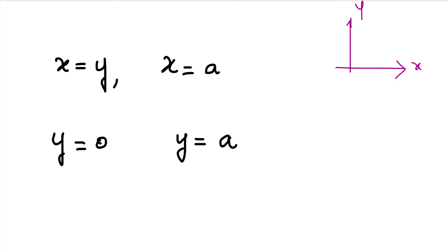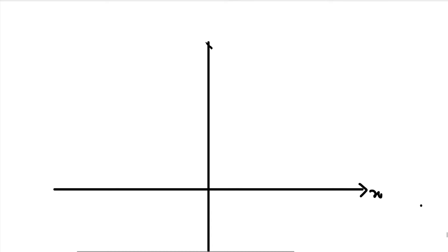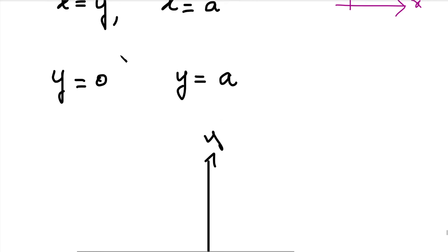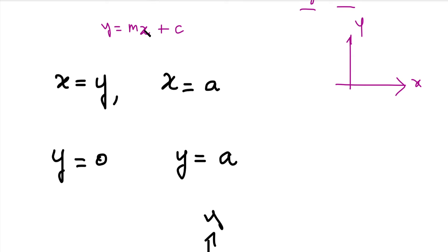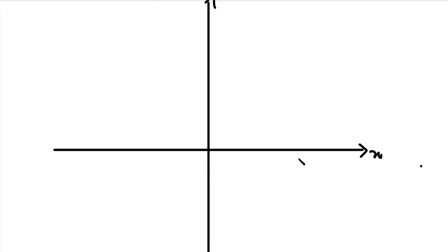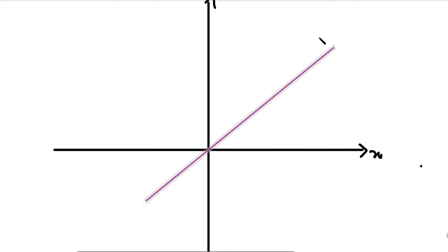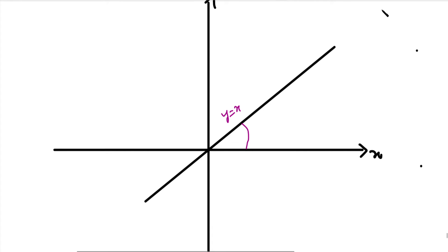Now we have four curves bounding the region. This is the x-axis and this is the y-axis. The first line is x equal to y, that is y equal to x. Using the formula y = mx + c, we get y = 1·x, a straight line through the origin making a 45-degree angle with the x-axis since m = 1. So we draw this line y = x at 45 degrees.